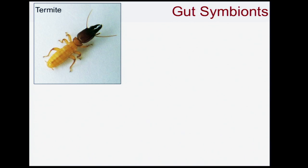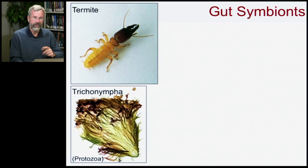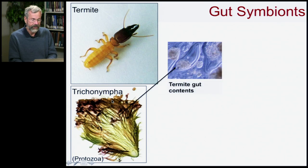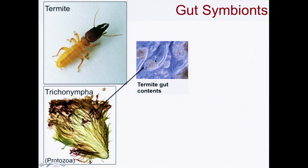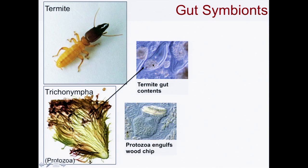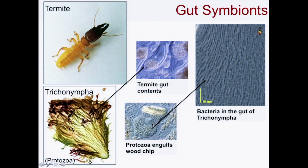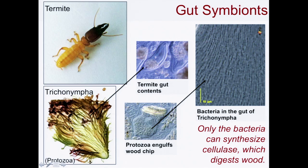An extraordinary example of gut symbionts involves the termites. People don't like termites because they can eat wood — and our houses. But how do they digest the wood? It turns out that digestion depends on their gut symbionts. Inside the digestive system of a termite, there are protozoa called trichonympha. The trichonympha engulfs the wood chip chewed by the termite, and it has bacteria in its own gut. Those bacteria are what actually digest the cellulose — only they can synthesize cellulase, which digests the cellulose in wood.